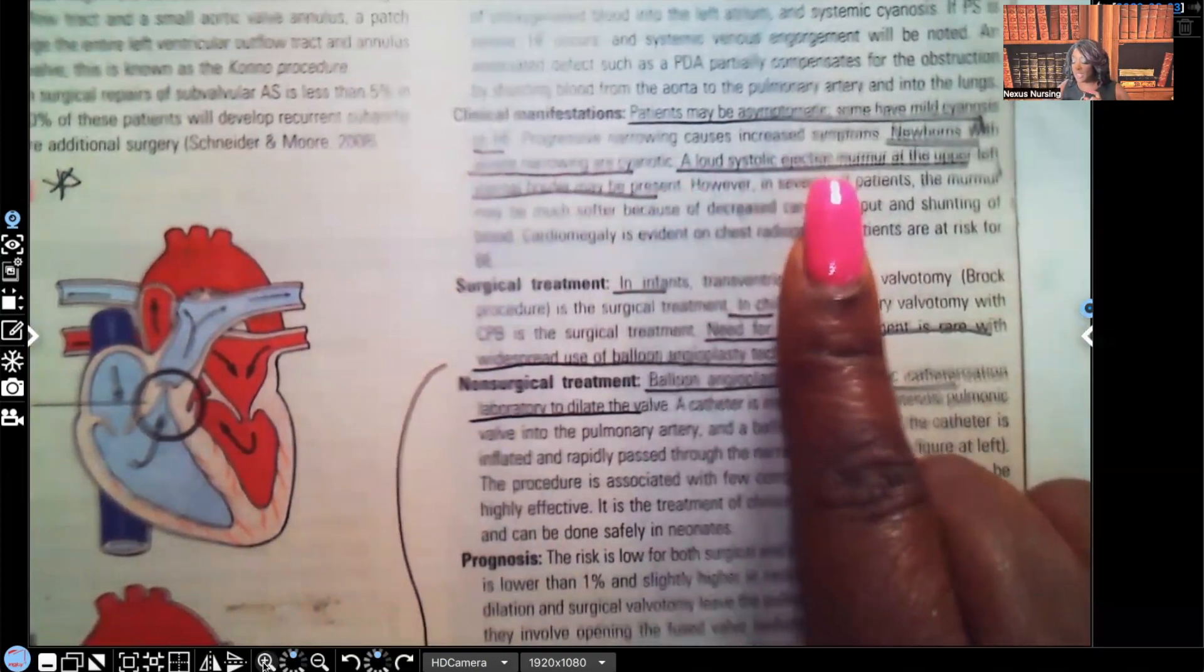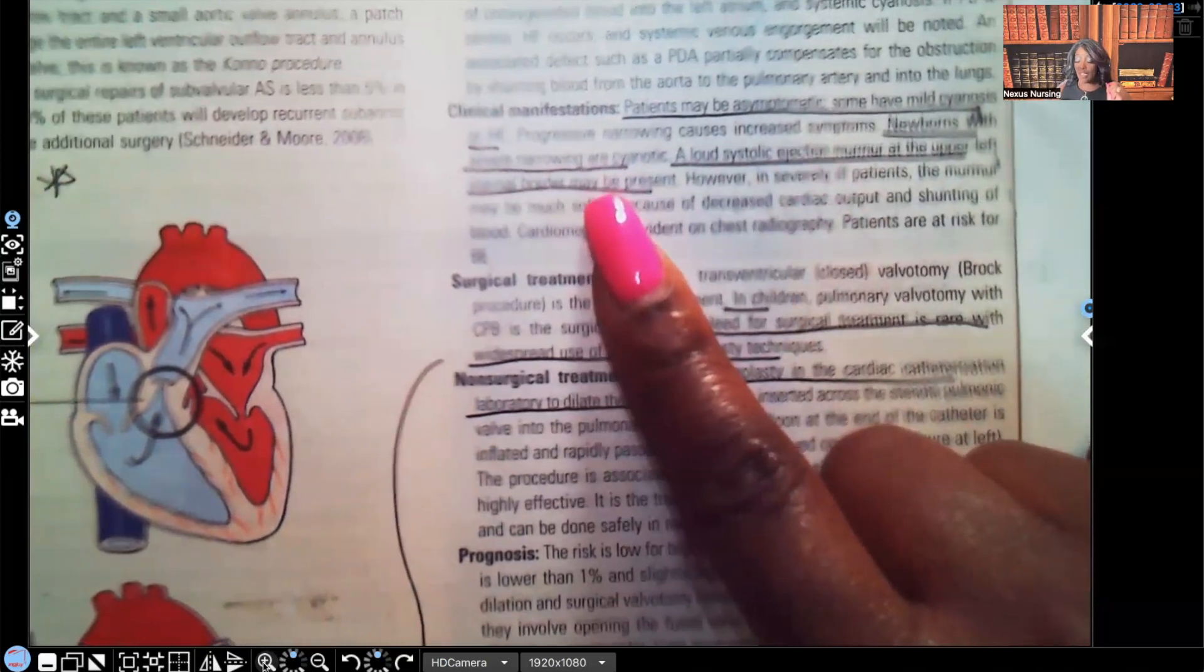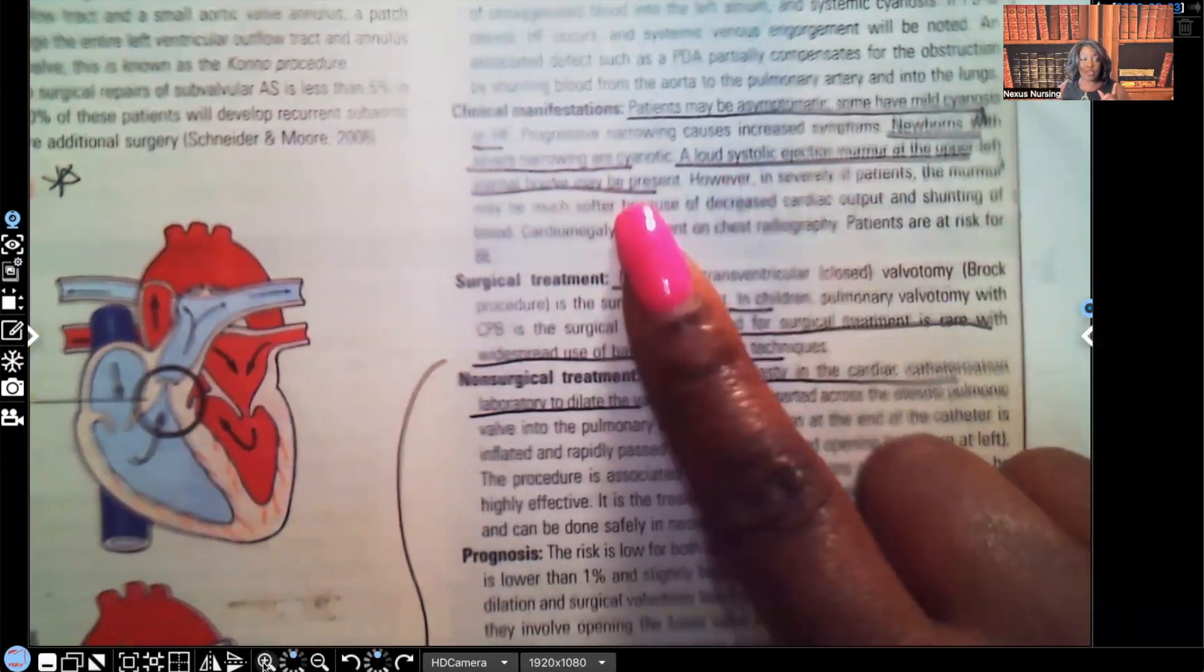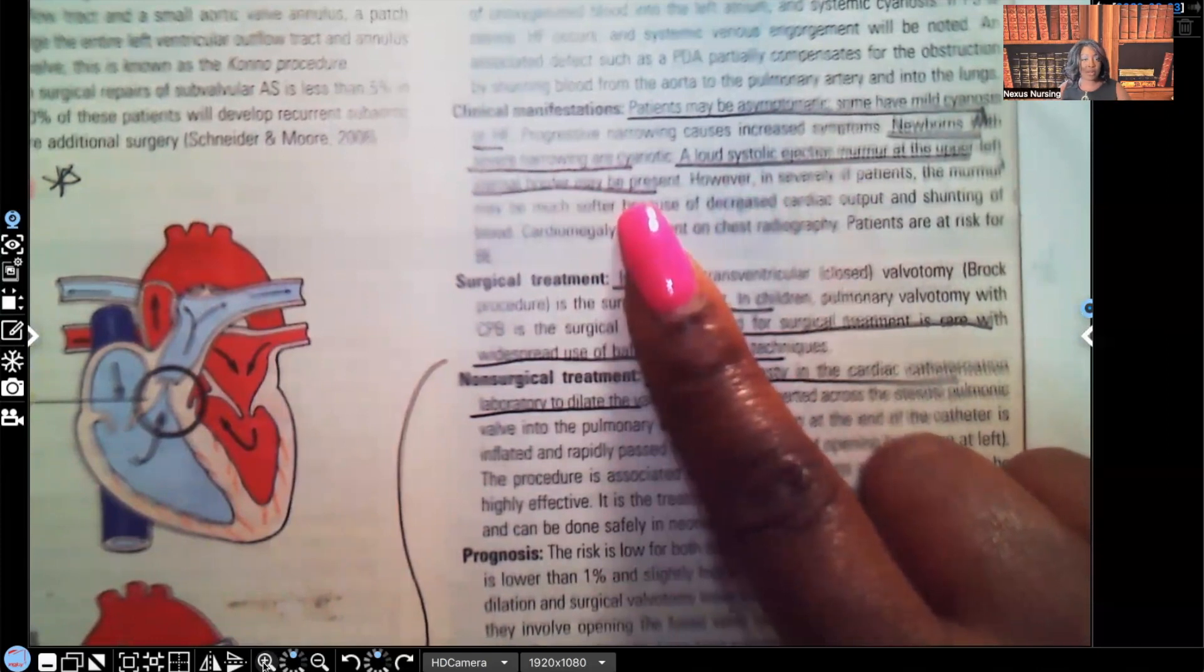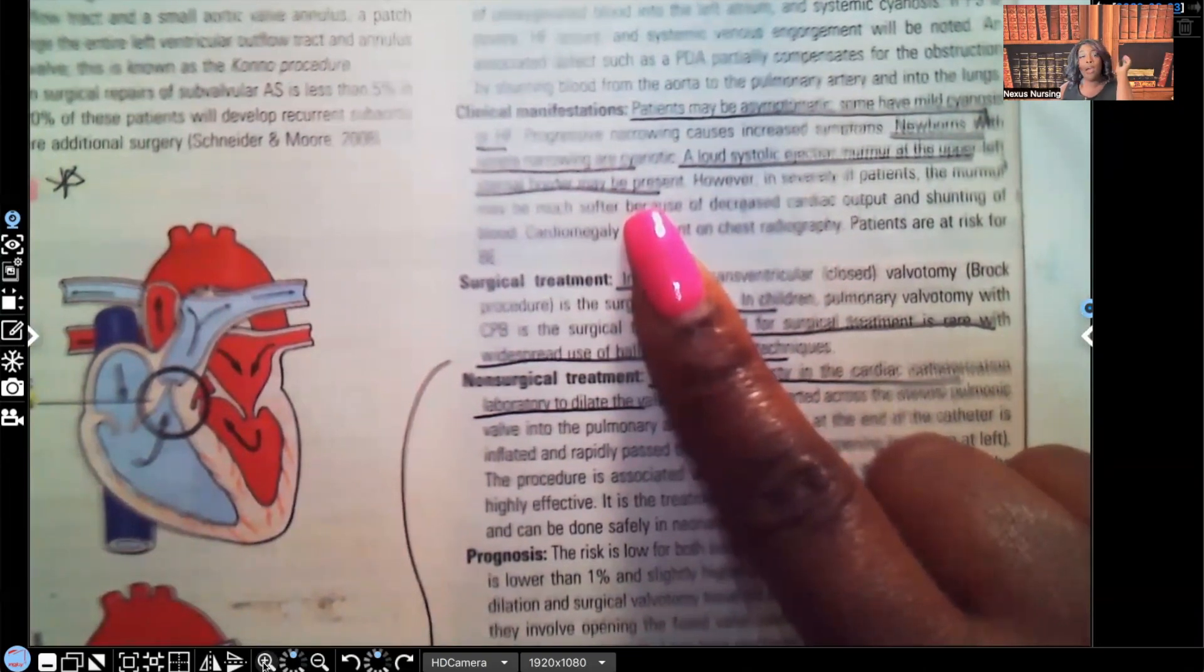Look at this: loud systolic ejection murmur at the upper left sternal border may be present. Let me tell you, if you see a test question with loud systolic ejection murmur at the upper left sternal border, you're going to be thinking of pulmonic stenosis.